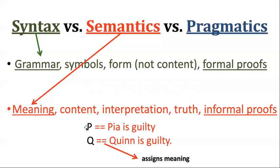In order for something to be true or false — like in order for P, that atomic sentence, to be true — it has to mean something like 'P is guilty', and then the world has to be a certain way, like P is actually guilty in the world. So meaning and truth go together; you can't have truth without meaning, and that's why truth is a semantic concept. Interpreting these things is giving them meanings, and interpretations are semantic concepts. When we do informal proofs in English, that's also a semantic idea — your audience has to understand the meanings of the words. For example, if I tell you 'P and Quinn went to the movies', so it follows that 'P went to the movies' — you have to know what 'and' means for that inference to be valid. That's why informal proofs are semantic objects too.